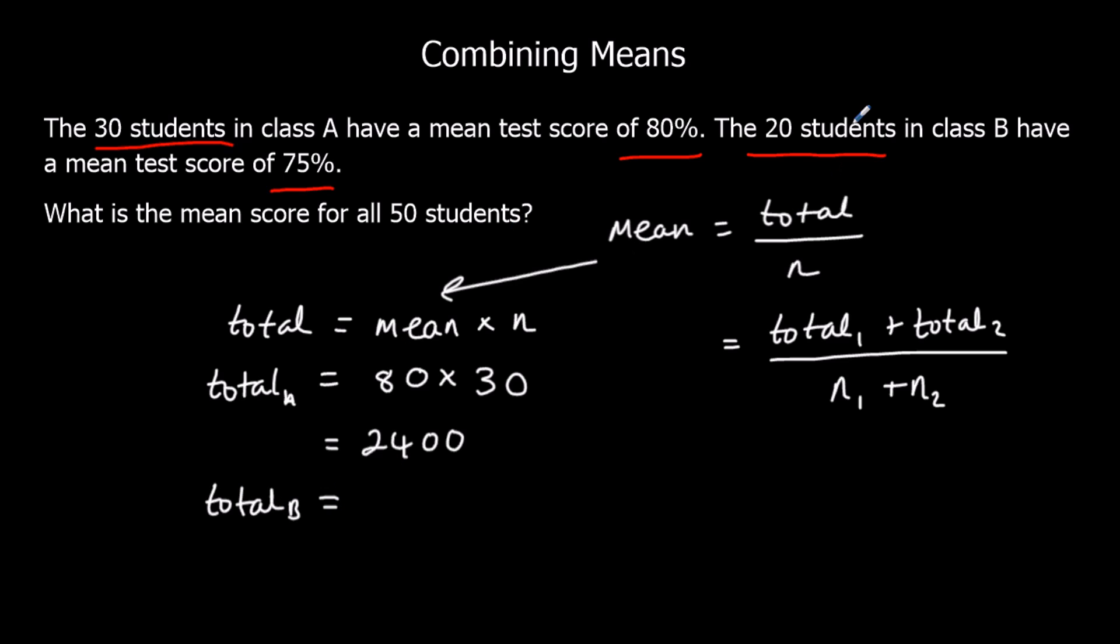And we do the same for group B. So we've got 20 students with a mean of 75%. So 75 times 20, which is 1500. So total in A, 2400, plus the total in B, 1500, divided by how many?